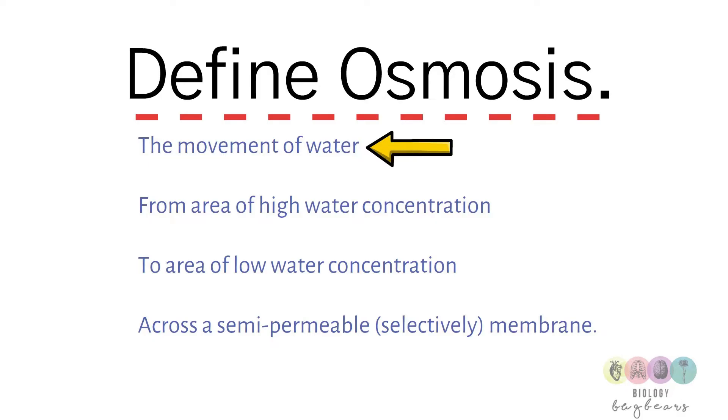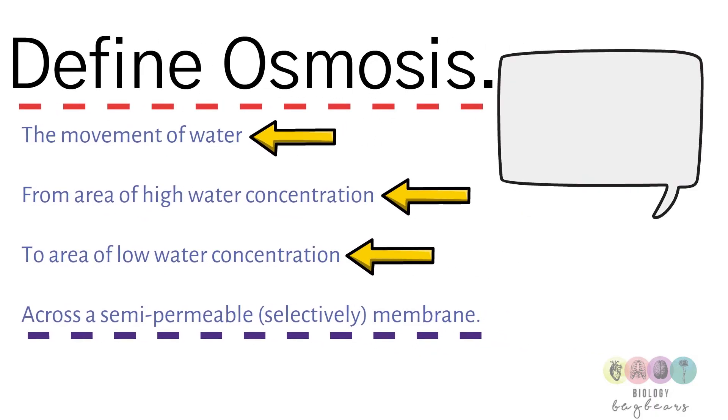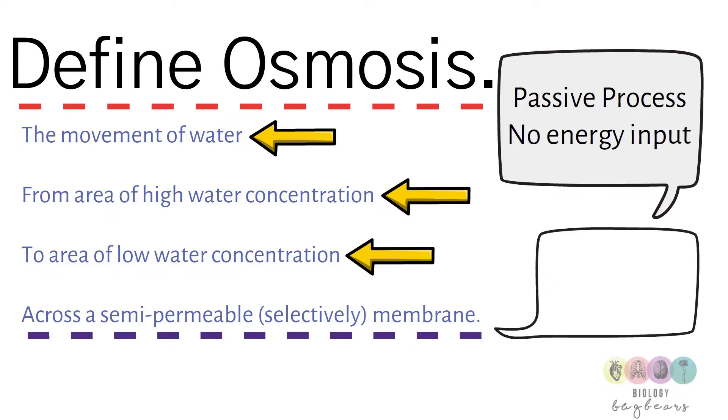What is it? It's the movement of water from an area of high water concentration to an area of low water concentration across a semi-permeable membrane or a selectively permeable membrane. Osmosis is a passive process as in it does not require any energy input by the cell. It's described as diffusion of water because that's what it is. It's a special case of diffusion.